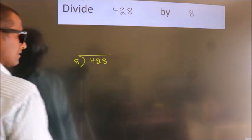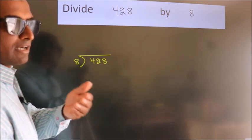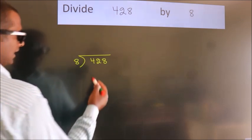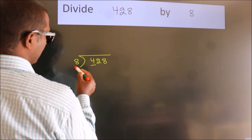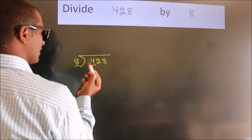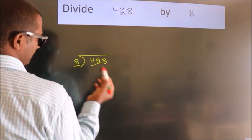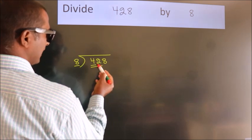This is your step 1. Next, here we have 4, here 8. 4 smaller than 8. So we should take two numbers, 42.